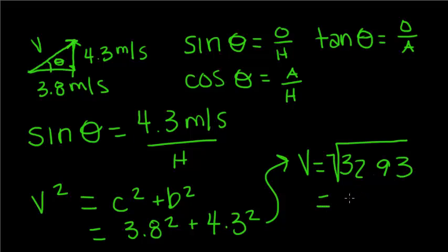Taking the square root of that number, we get the v component is equal to 5.74 meters per second. So, this is component v.